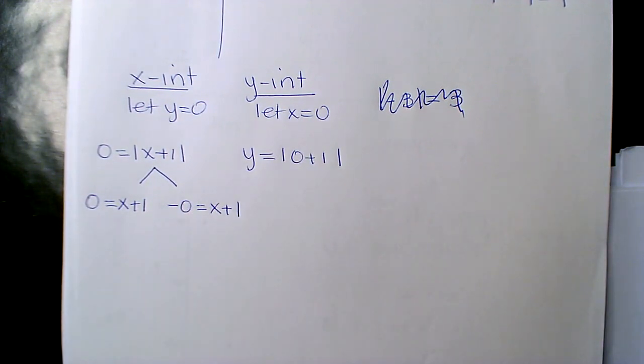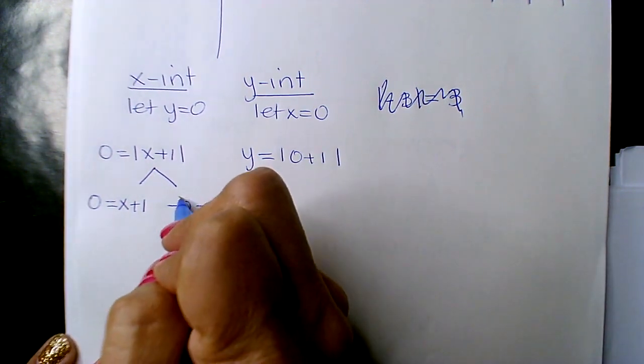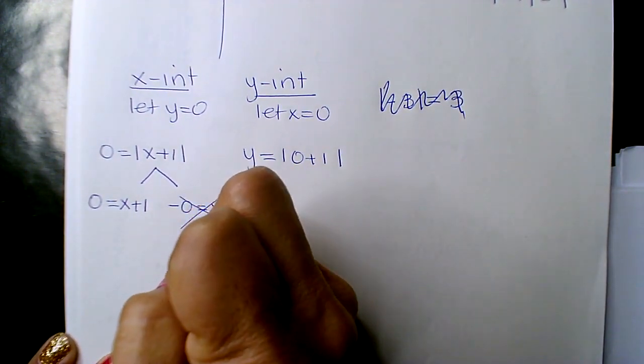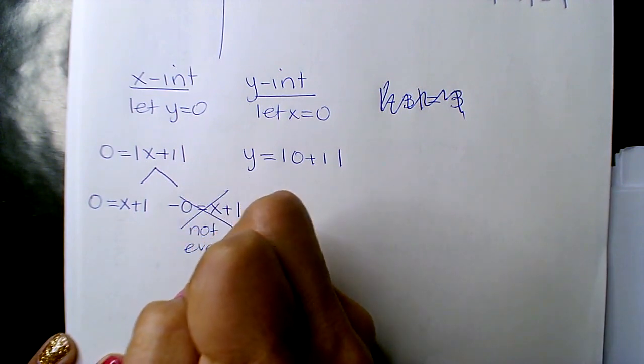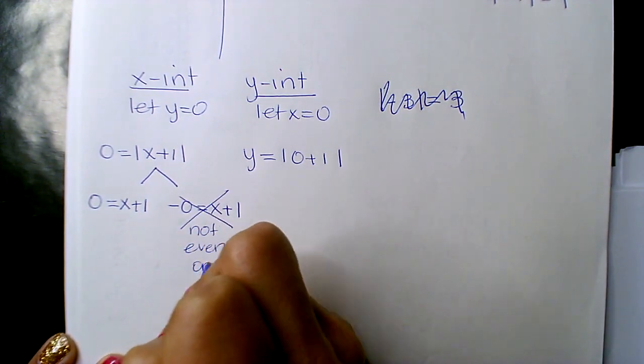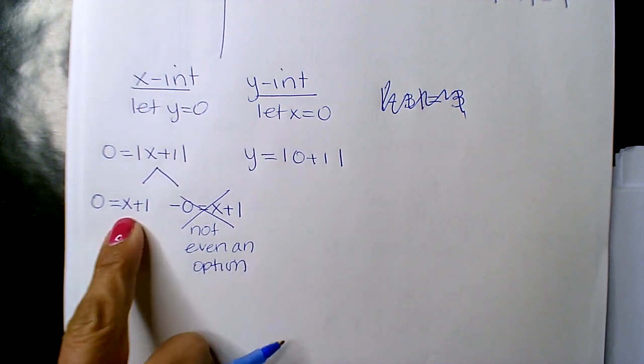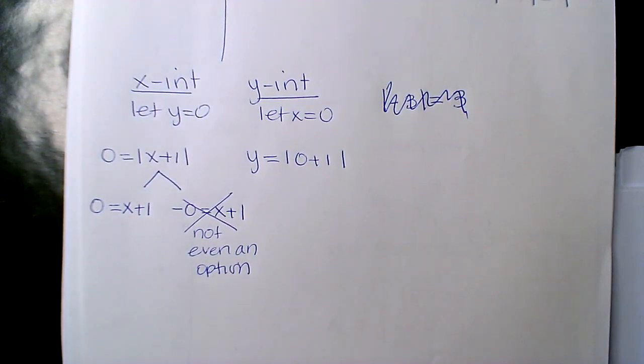However, zero is always positive. Zero cannot be a negative number, so this is not even an option. You're only taking the positive zero. There's only one zero on the number line. You can't have a negative reflection of yourself.